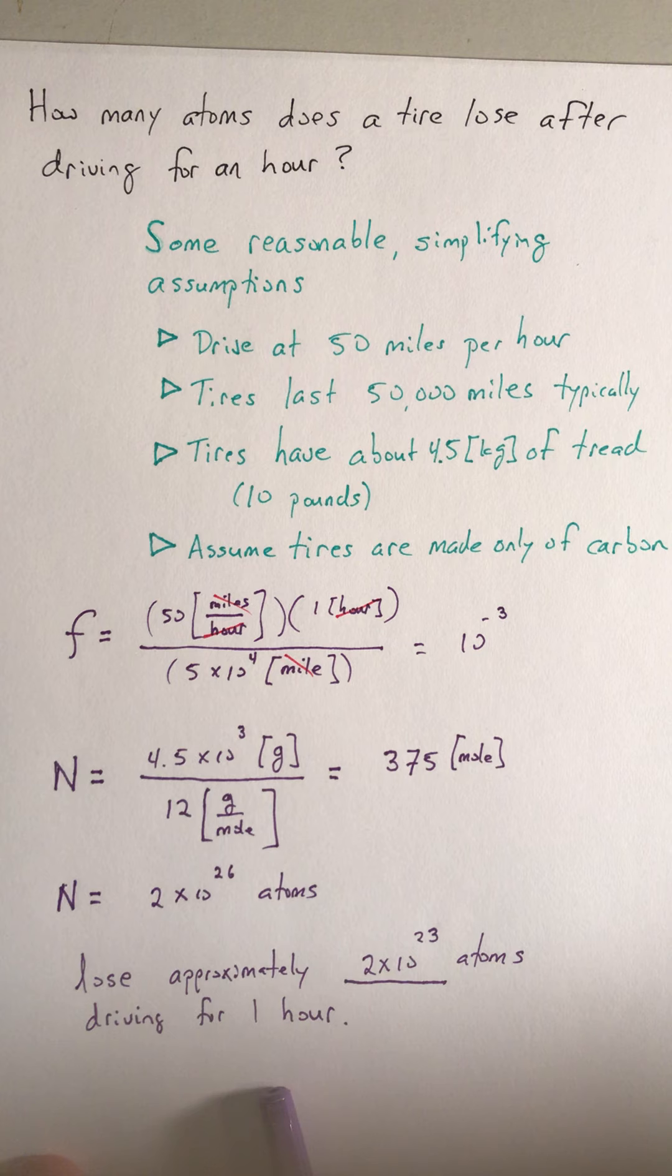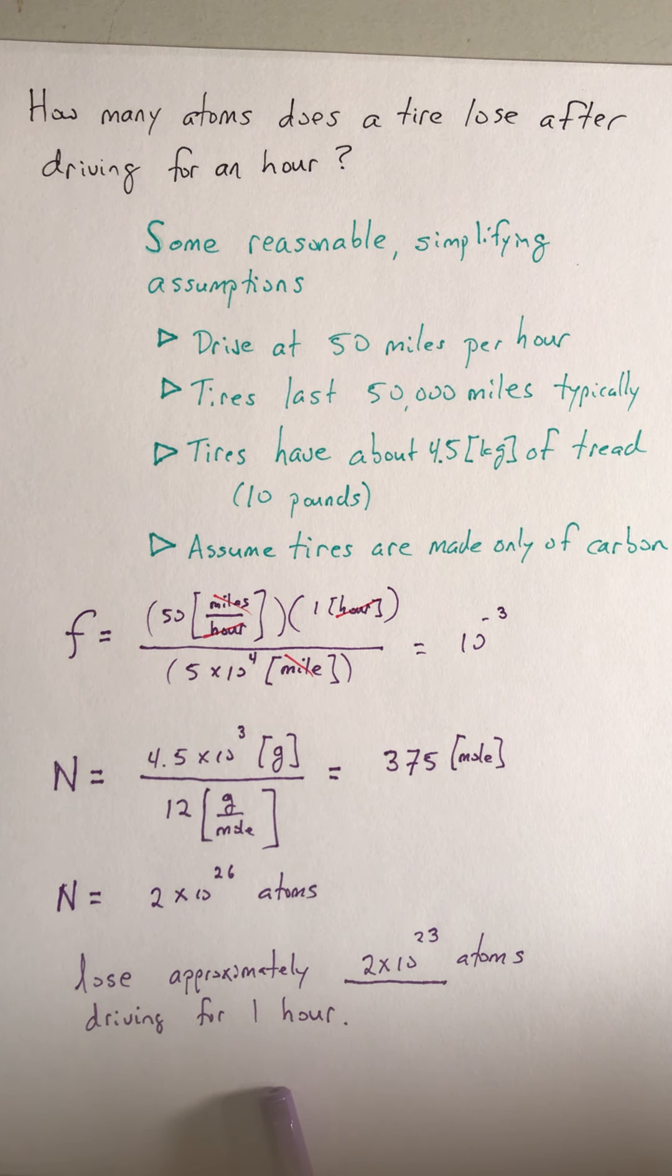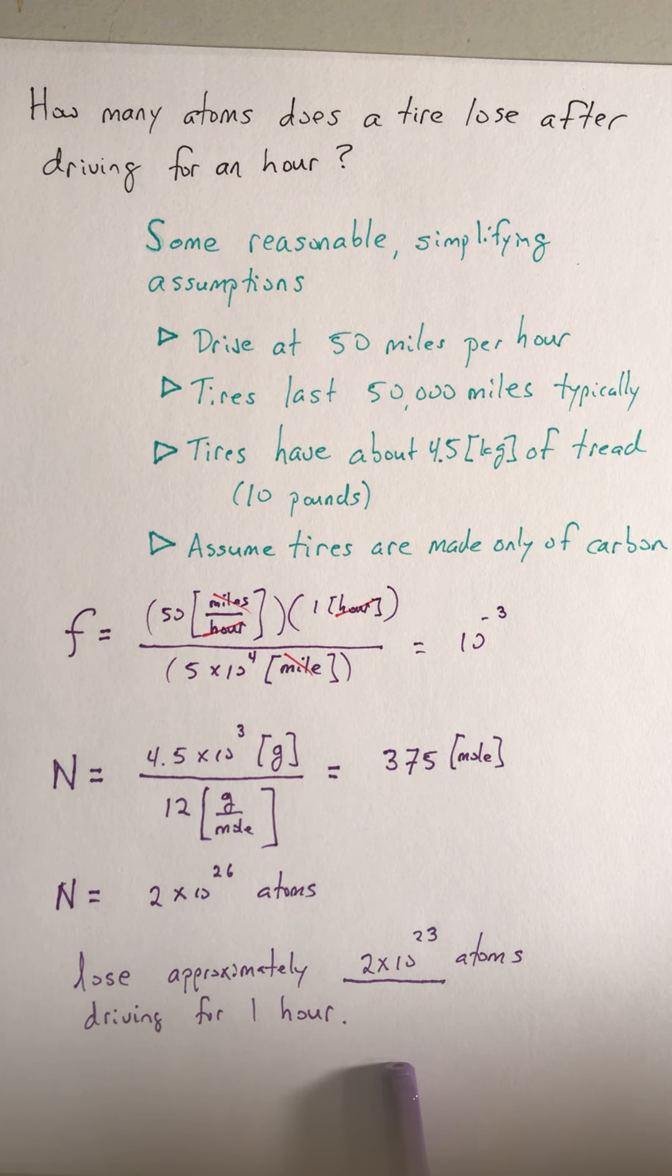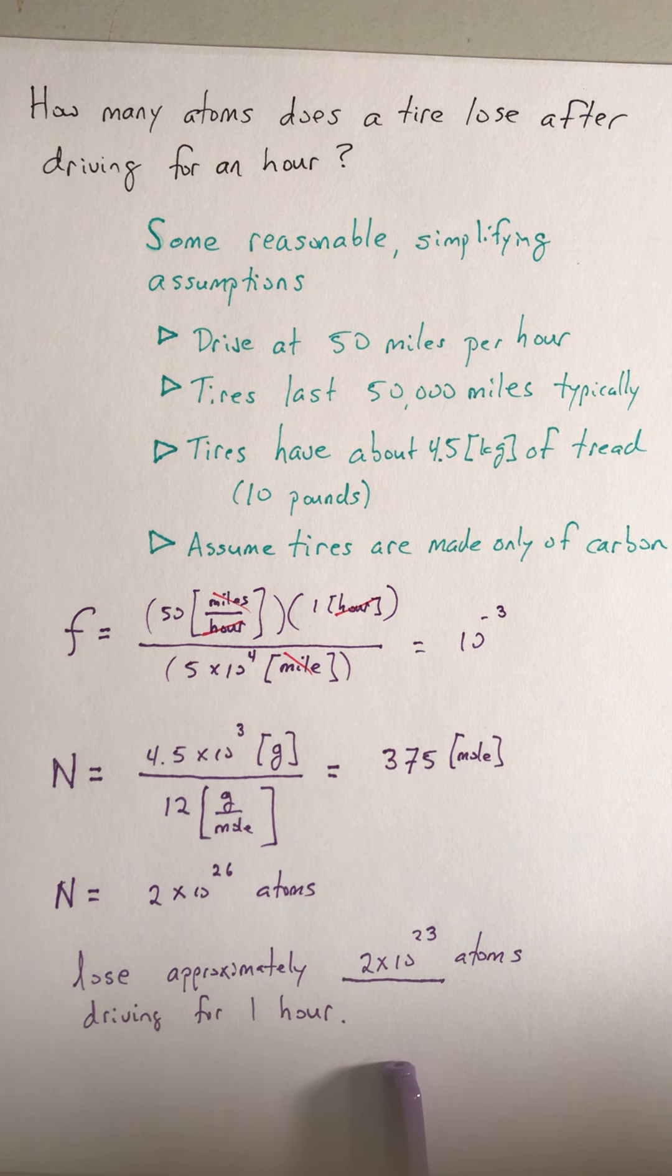The way a Fermi problem is going to come up in a physics class is you're going to get an answer for something, and it might be something very far out of your experience, and you want to be able to make some sort of reasonable estimate—does your answer make sense?